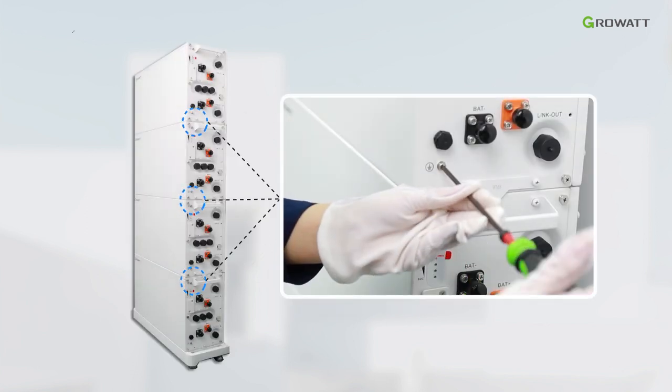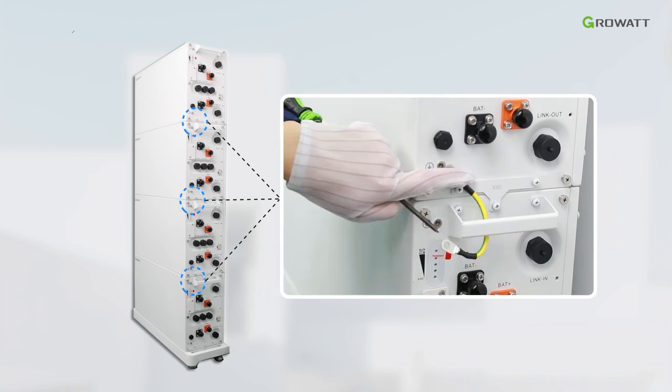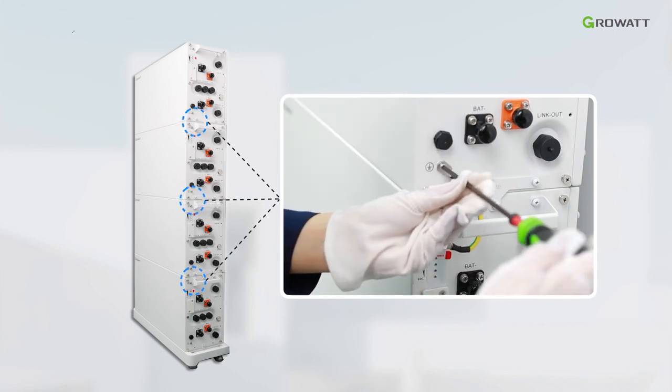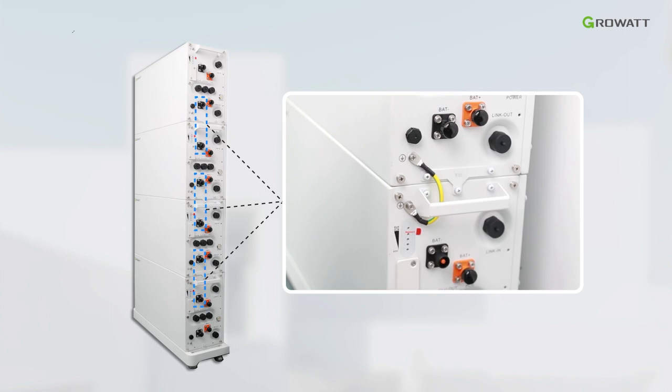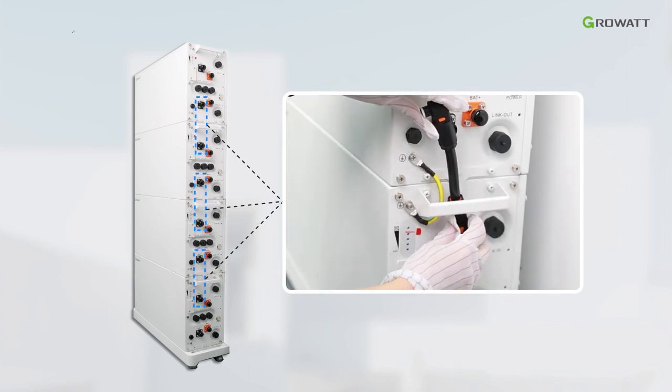Connect cables between ALP battery modules. First, connect the PE cable in sequence. Second, remove the waterproof covers from the DC terminals. Connect signal cables between battery modules in sequence.